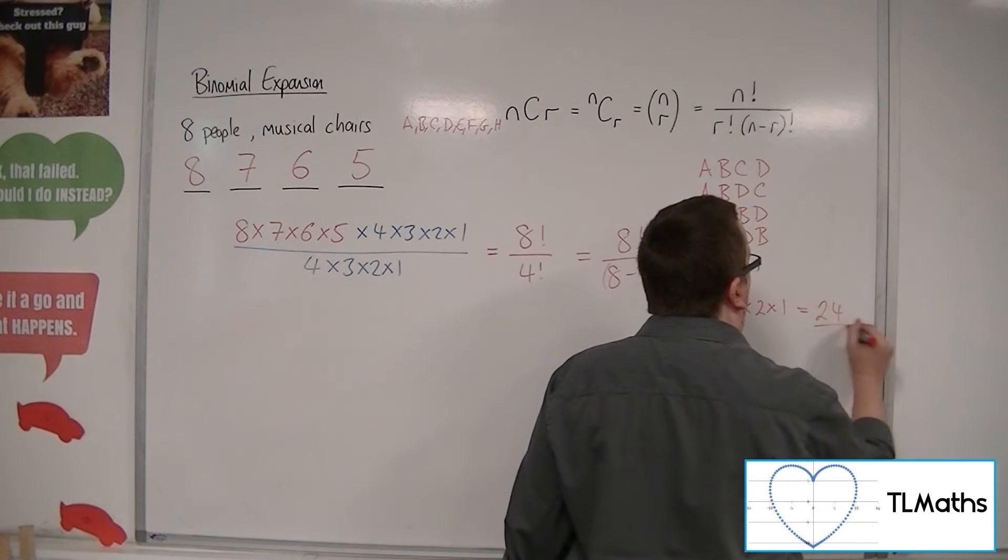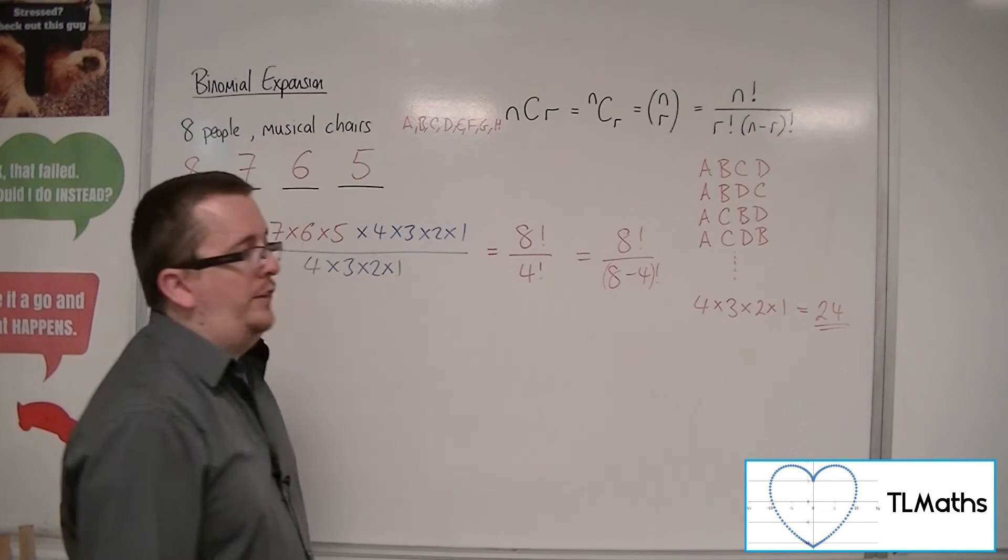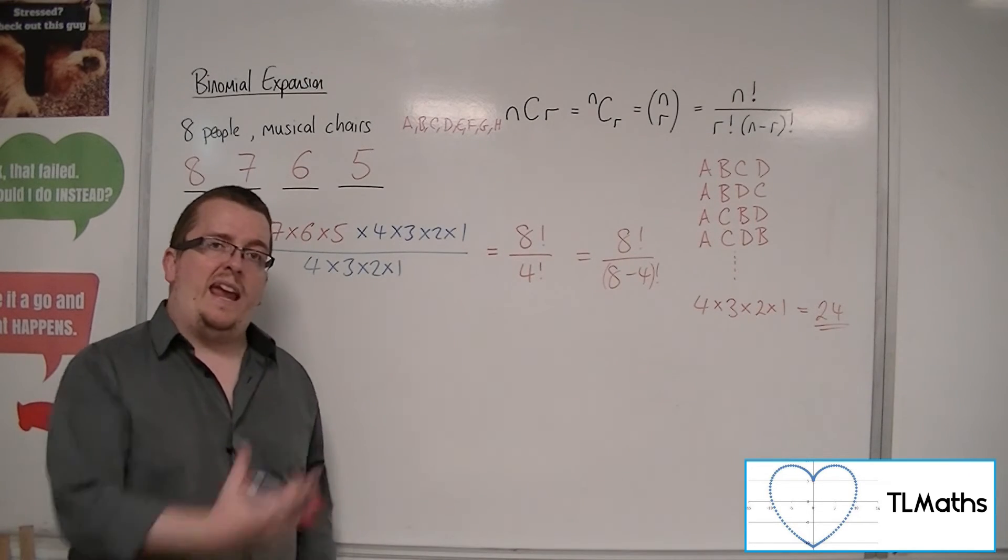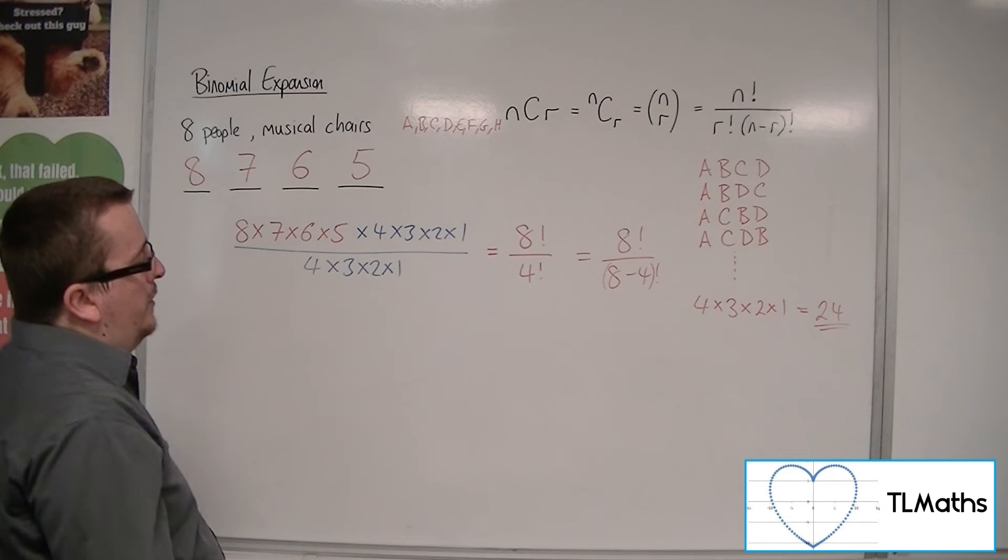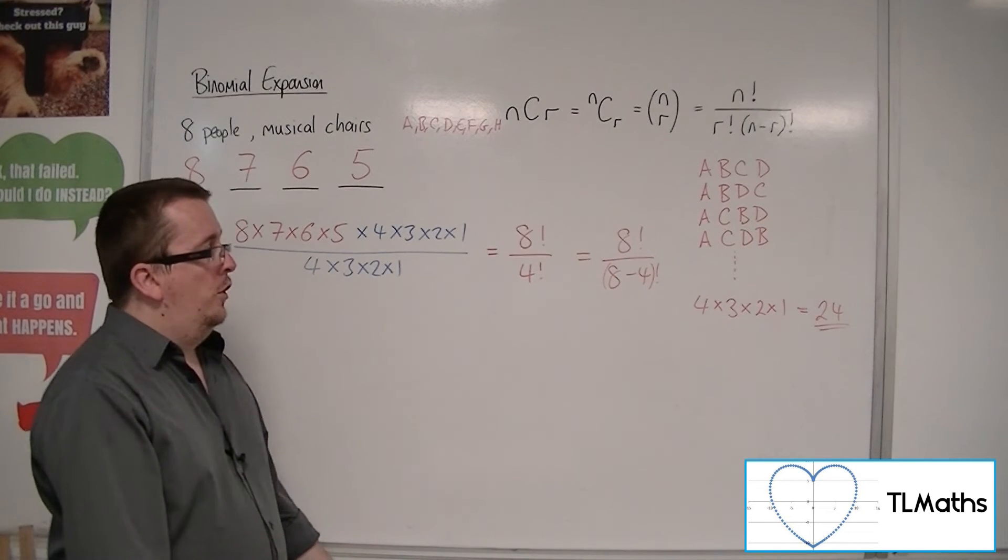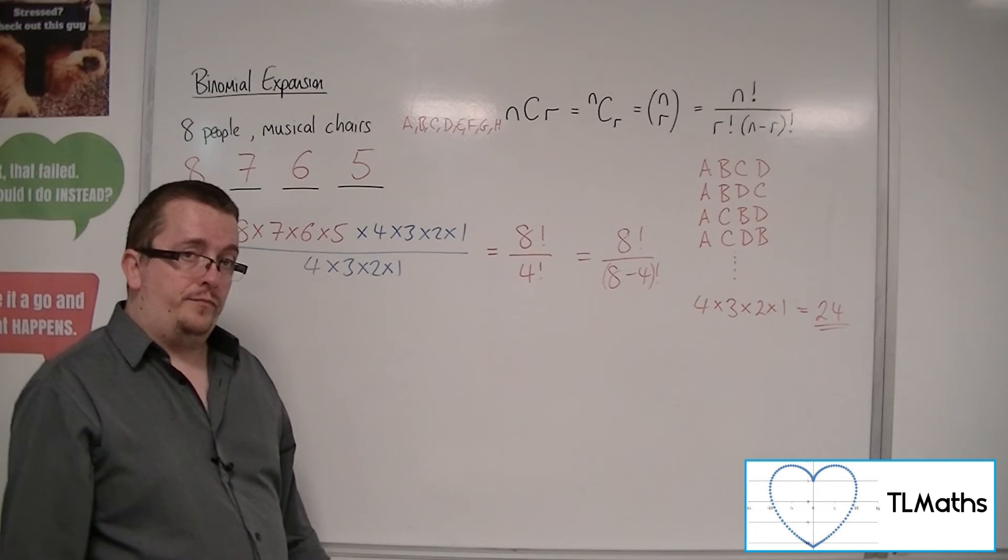So if I was to write them all out, there would be 24 different ways of writing down A, B, C, D in any order. So that means that I've got 24 too many.